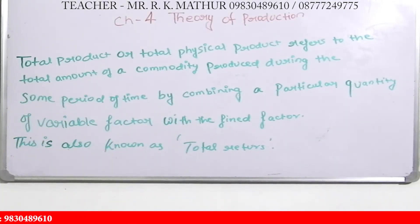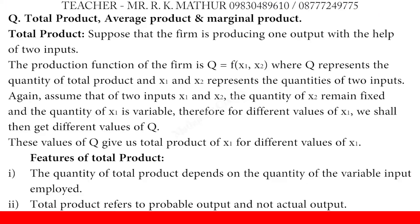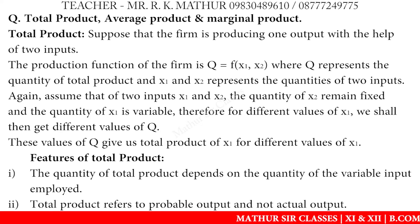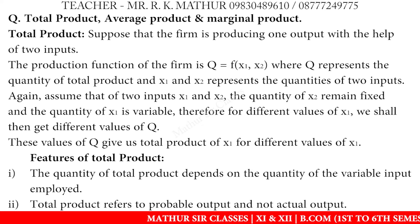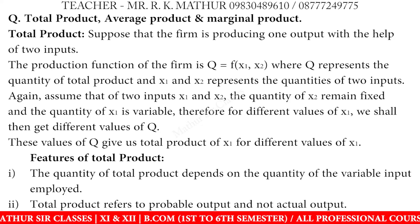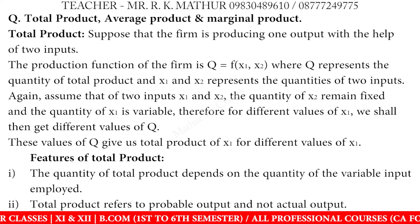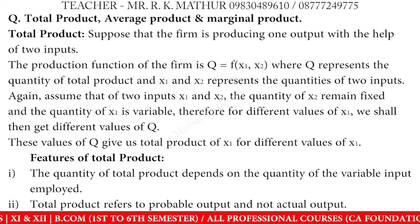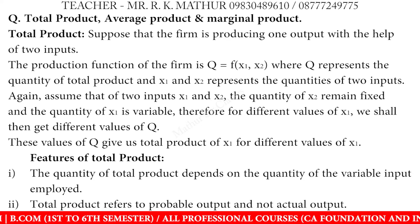See in the book: the production function of the firm is q = f(x1, x2), where x1 and x2 are inputs. Q represents the quantity of total product, and x1 and x2 represent the two inputs. Assume that the quantity of x2 remains fixed and the quantity of x1 is variable.